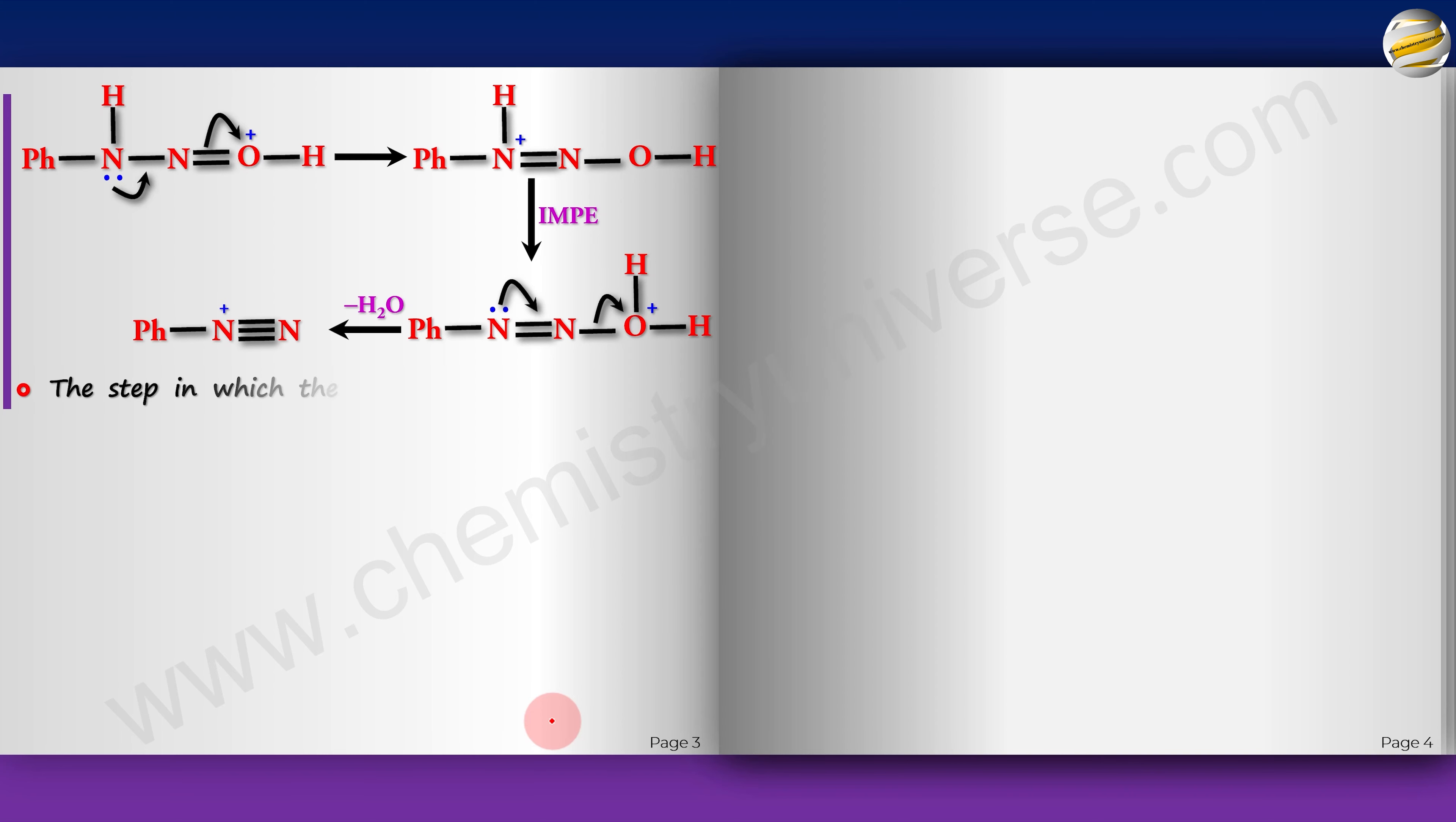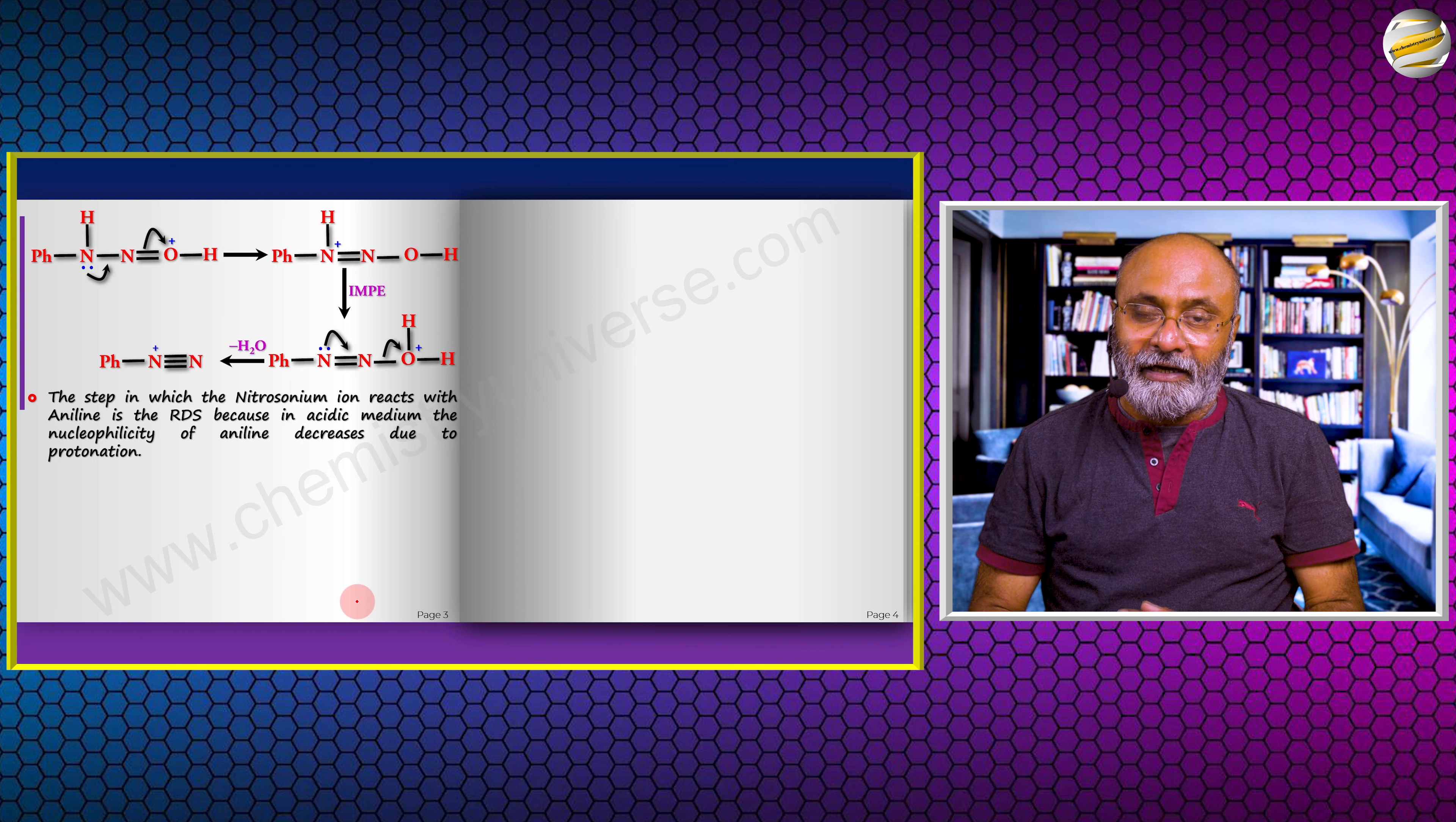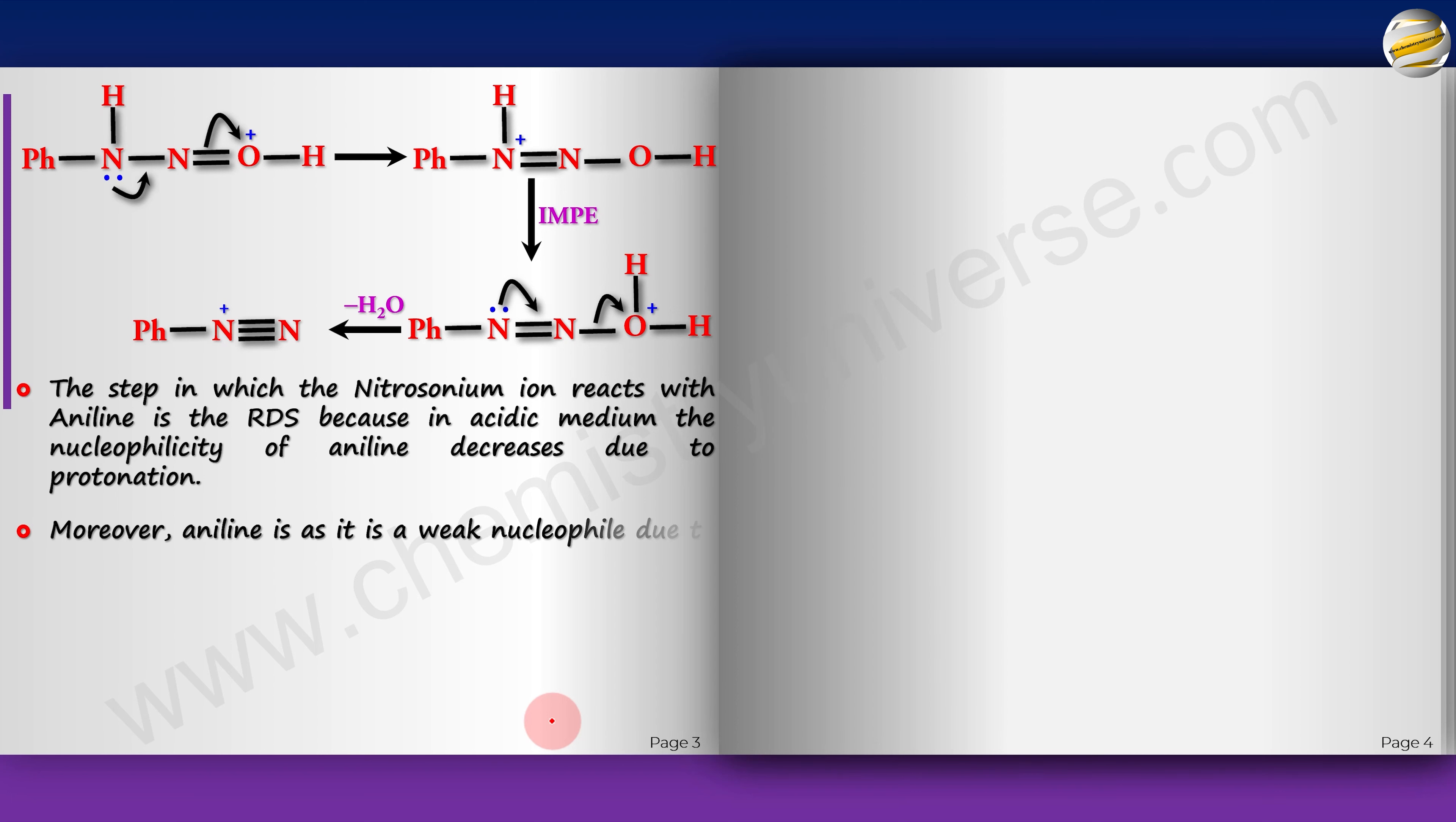The step in which the nitrosonium ion reacts with aniline is the RDS. In acidic medium, the nucleophilicity of aniline decreases due to protonation. Whenever you have an acidic medium, the formation of diazonium slows down because aniline gets formed into an anilinium ion and no longer has a lone pair to attack with. When we observe that protonation of aniline is decreasing the rate, we deduce that's the RDS. Moreover, aniline is as it is a weak nucleophile due to delocalization of the lone pair.